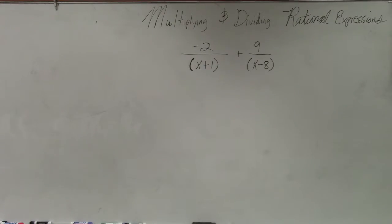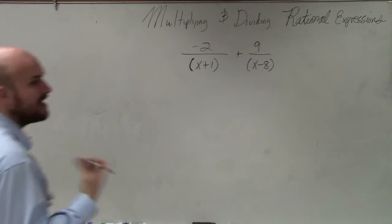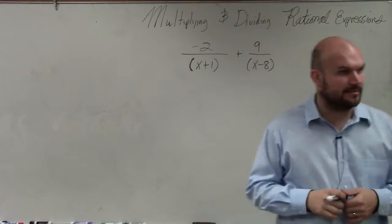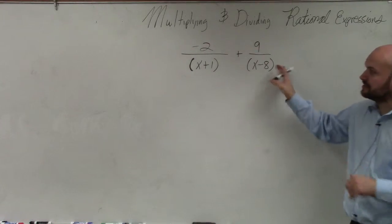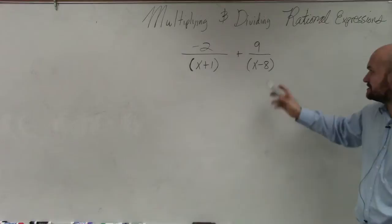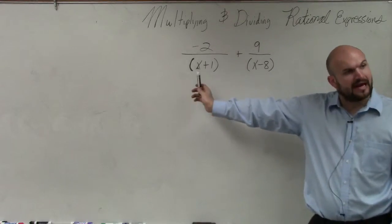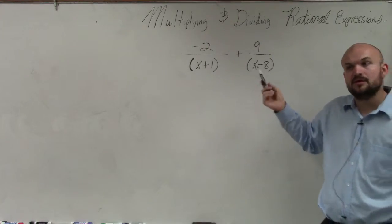This is what adding fractions with unlike denominators looks like compared to adding rational expressions with unlike denominators. When you guys look at this, you can see we have two fractions here, and they do not have the same denominators.